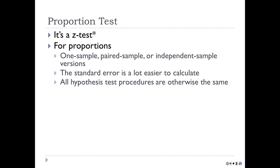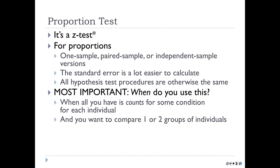You have one sample versions of this test, paired samples versions, or independent samples versions. We're only going to look at one sample and independent samples. The standard error is a little easier to calculate than in the t-test, and the hypothesis test procedures are otherwise pretty much the same. You just follow the hypothesis test but plug in proportions instead of means, and plug in the formula for standard error instead of the formula you previously had.